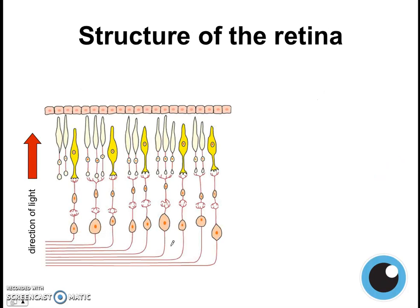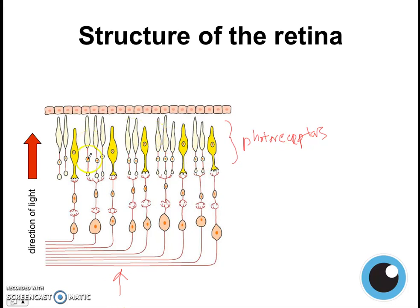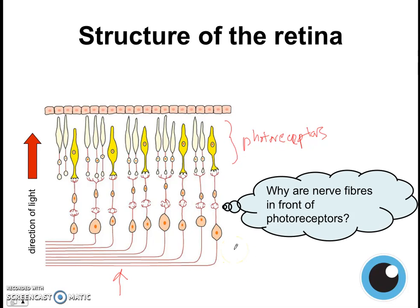So there we have it — here's our retina and here are our photoreceptors. Now you might be wondering: the light is coming in from here, and the photoreceptors are what detect the light, so why is it that the nerve fibers are in front of the photoreceptors? Wouldn't it make more sense for the photoreceptors to be in front and the nerve fibers at the back?